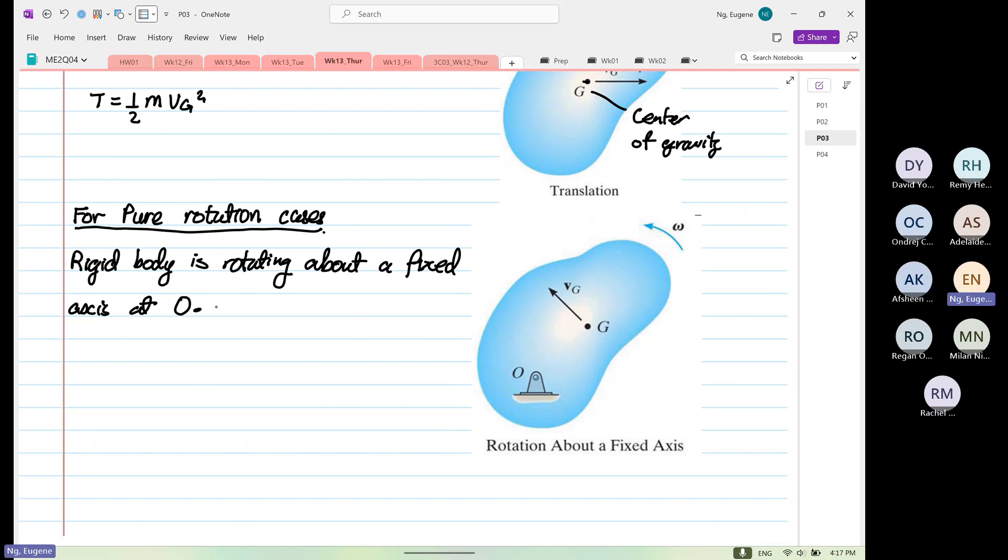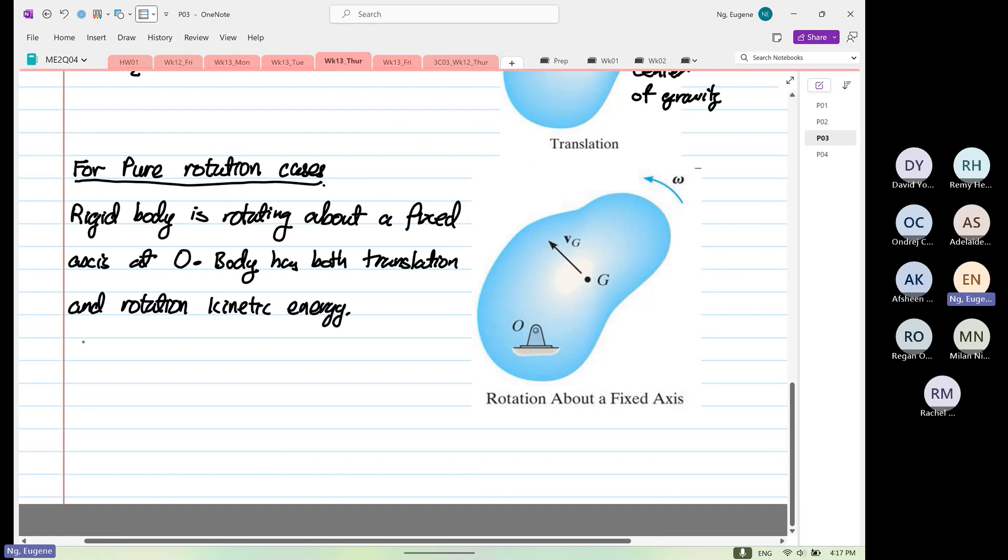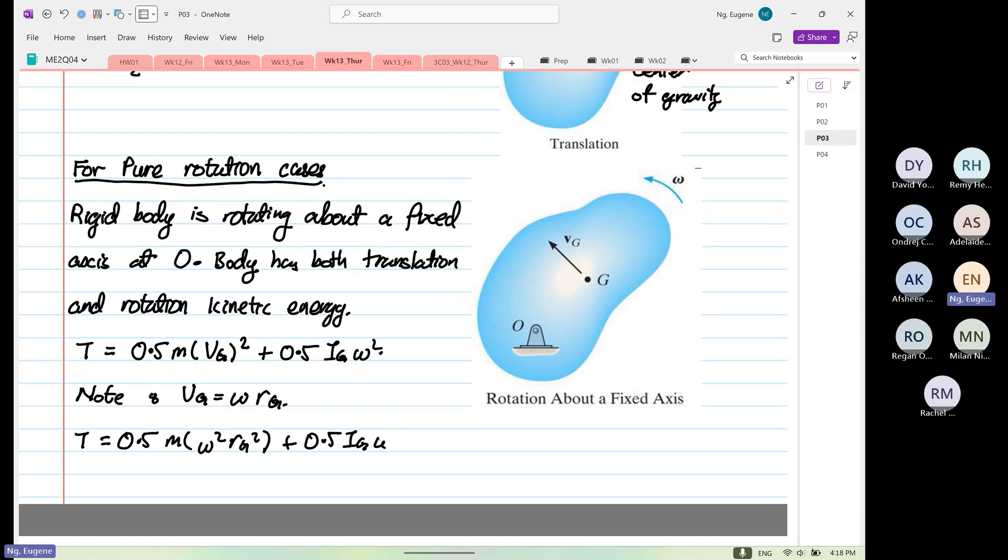So the body has both translation and rotation kinetic energy. So we know that T for this case will be half m v_g squared and then half i_g omega squared, and note that v_g is equal to omega r_g. So T will be equal to 0.5 m omega squared r_g squared plus by 0.5 i_g omega squared.